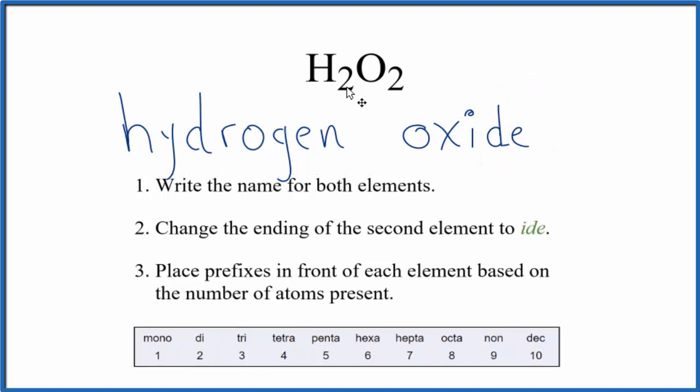But we have to take into account these subscripts here, the 2 on the H, the 2 for the oxygen. So to do that, for 2, the prefix we're going to use is di. We're going to put a prefix in front of each one of these element names.